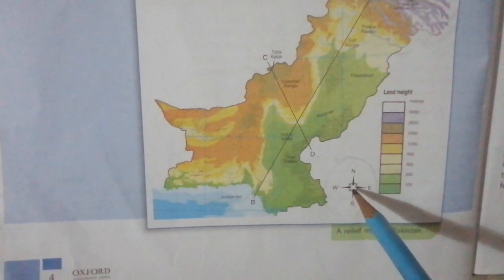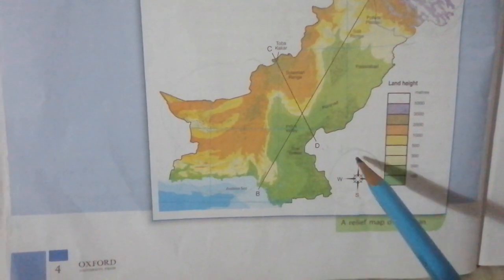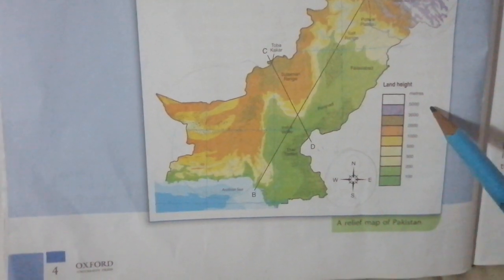Now students, move to page number four. This is the relief map of Pakistan. There are two keys with this map. The first key is explaining the directions — north, south, east, and west — and the other key is explaining the different heights of land by using different colors.